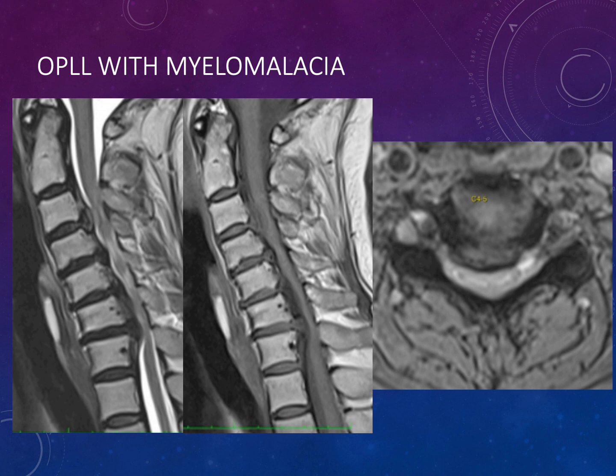There are other sources of canal narrowing beyond disc pathology. Ossification of the posterior longitudinal ligament (OPLL) can cause massive narrowing of the canal. On gradient echo images, OPLL can show high signal because marrow signal extends into it.